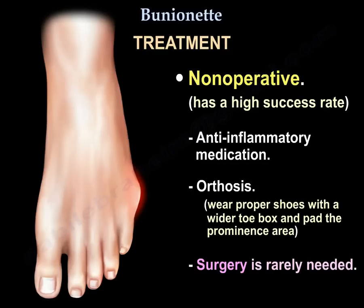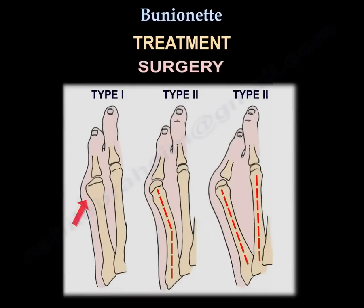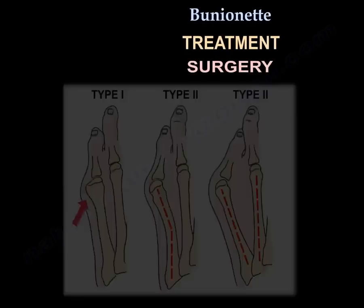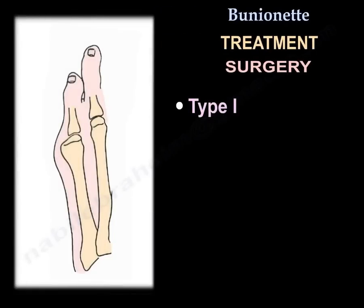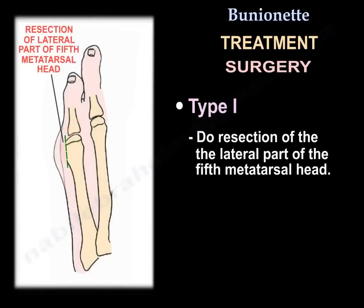If conservative measures fail, surgery will be needed. Here is a simplified way for selecting the type of surgery for each type. In Type 1, you perform resection of the lateral part of the 5th metatarsal head.